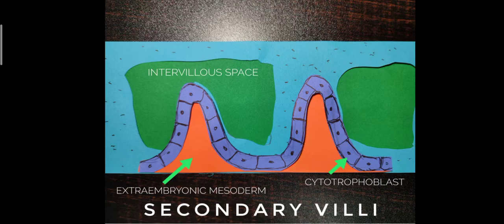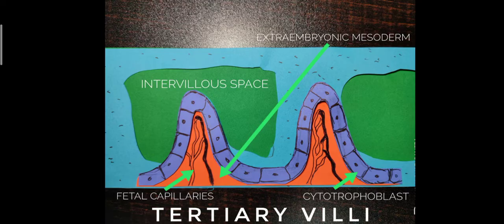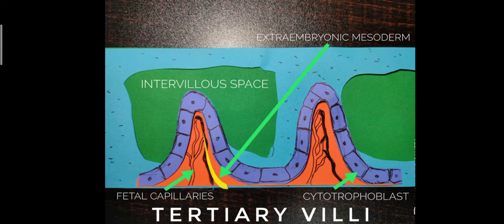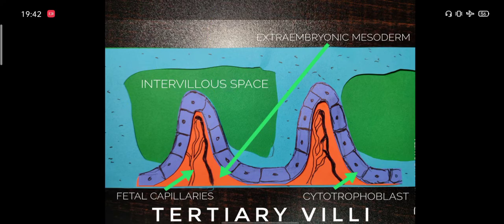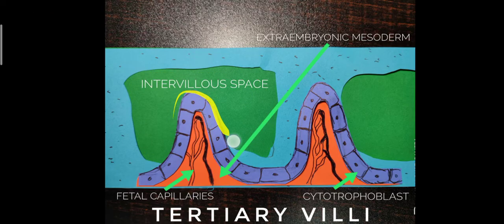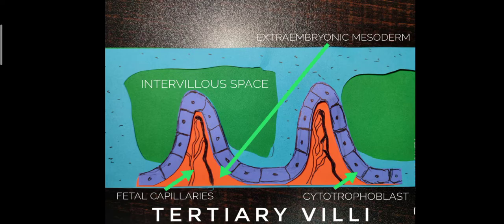In the tertiary villi stage, along with the cytotrophoblast and extra-embryonic mesoderm, fetal capillaries also project, developing into the chorionic villi. You can see how these villi are located within the intervillus space. Later, maternal blood is pooled inside the intervillus space and materials are transferred to the fetal blood through these villi. This is how the primary, secondary, and tertiary villi are developed.